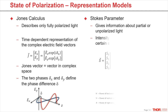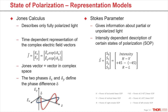The Stokes parameters are an intensity-dependent description of certain states of polarization. The first entry, S0, describes the total intensity. S1, S2, and S3 describe the state of polarization in a three-dimensional space. S1 is the proportion of horizontal to vertical linear polarization. S2 is the proportion on the linear plus/minus 45 degree. And S3 is the portion of right and left circular polarization. Stokes parameters don't give information about the phase difference.